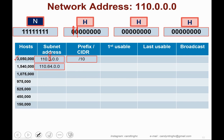The second requirement is 1,540,000 hosts. According to the addressing table, this requires slash 11. With slash 11 we have 11 ones, leaving 5 remaining host bits in the second byte. Two to the power of 5 is 32. Adding 32 to 64 gives 96, so the next subnet address is 110.96.0.0.